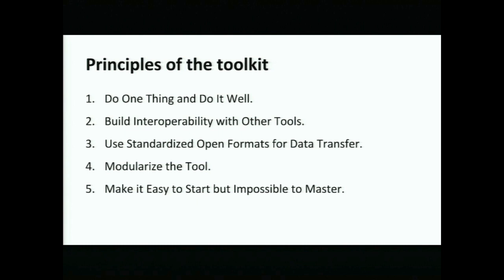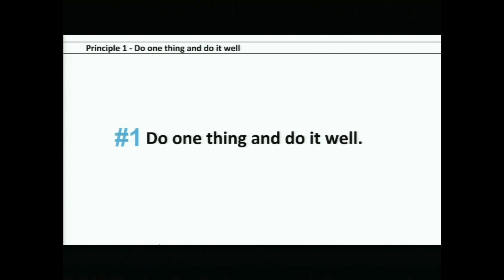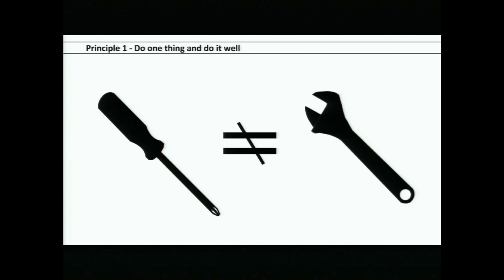The first principle of the toolkit is to do one thing and do it well. If you are a computer nerd, you may recognize this is actually the first bullet of the Unix doctrine. What this means is that one tool in your kit does not try to become another tool or do everything another tool does. A screwdriver does not try to be a wrench. This specialization of tools is fundamental to what makes a collection of tools a part of a kit — a series of tools designed to do similar processes but slightly differently, honed for different sorts of situations.